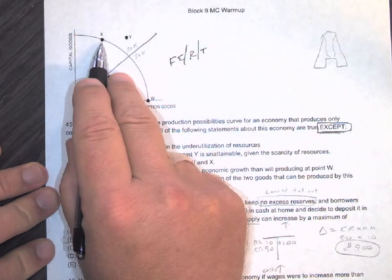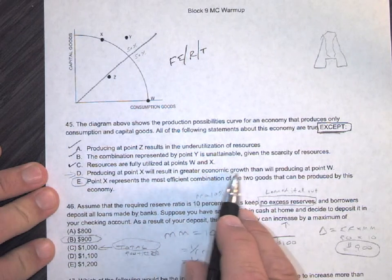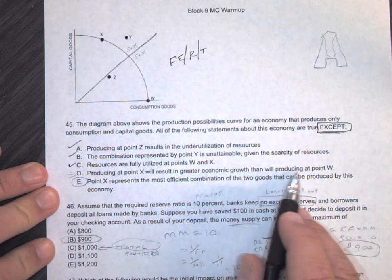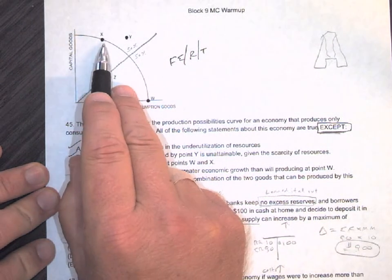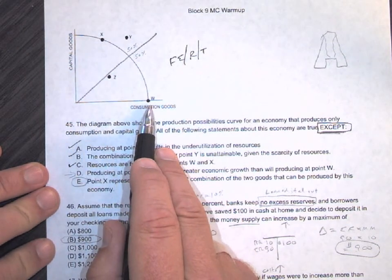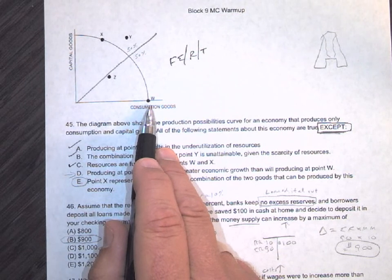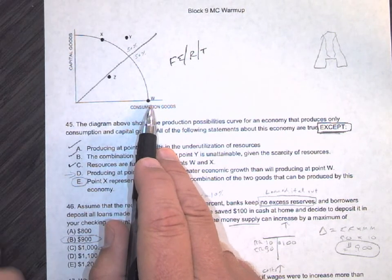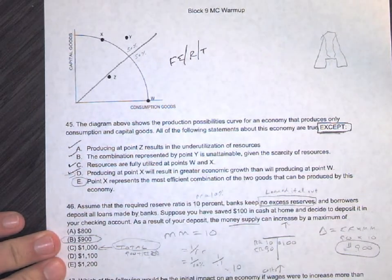Producing at point X, right there on the curve, will result in greater economic growth than producing at point W. X is closer to capital goods than it is to consumer goods. We grow when we produce more capital goods, because then later, if we have more capital goods, we can hire more workers and make more GDP than we could have previously. So D is also correct.